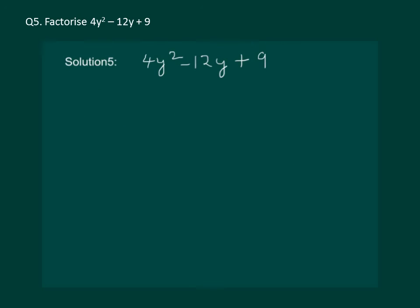Please read the question on the slide. Factorize 4y square minus 12y plus 9. Let us try to use our identity a minus b whole square is equal to a square minus 2ab plus b square. We can write our question as 2y whole square plus 3 whole square.